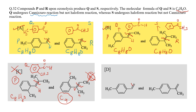For option D, one molecule is similar to a molecule in option A, so it could be P. But the other molecule again has the phenyl ring with six carbons plus three more outside — nine carbons total. So the product cannot be S and the starting material cannot be R. Option D is also eliminated. In conclusion, of the four given options, only A and B are correct. Hope you understood — thank you.